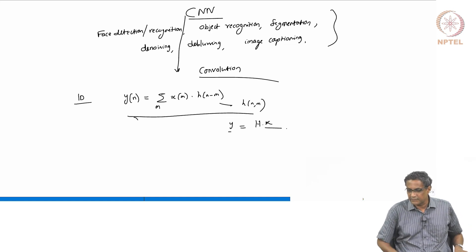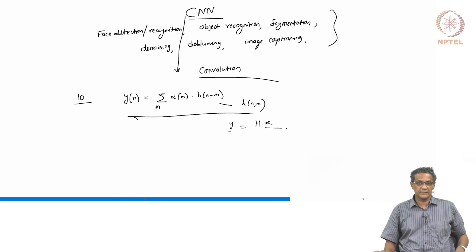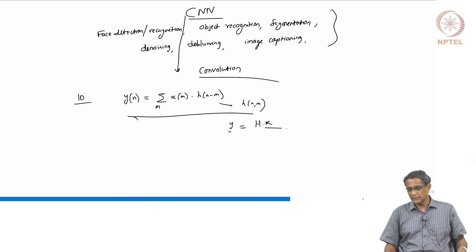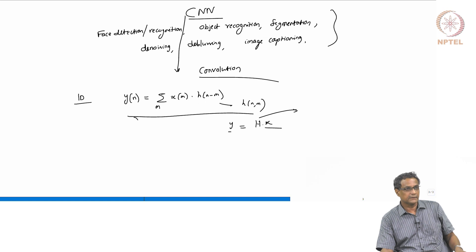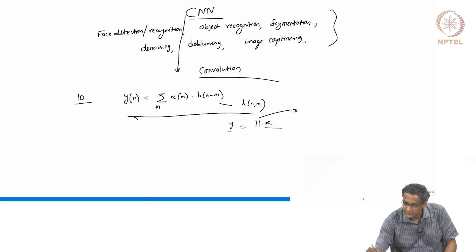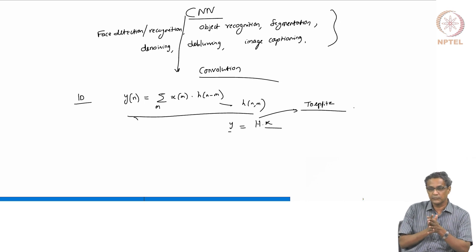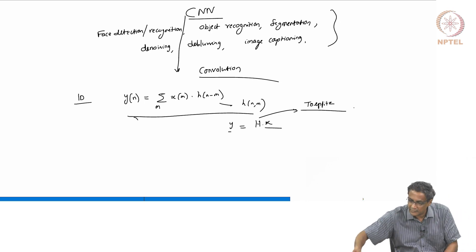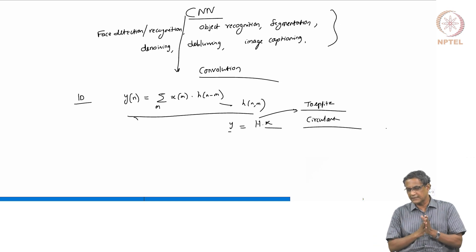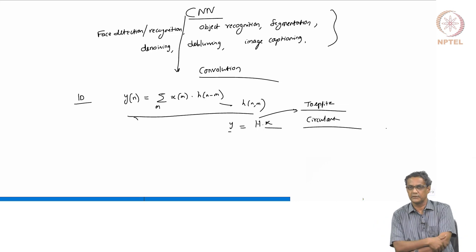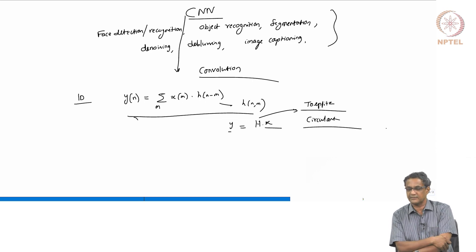So when you have an LTI system, this H has a particular structure — what is called a Toeplitz structure. This is not any old matrix; it is a matrix with a certain structure. And depending on how you express it, if you write linear convolution in terms of circular convolution — meaning you zero-pad X — then this H actually acquires an even better structure, what is called a circulant structure. A Toeplitz does not imply circulant, but circulant always implies Toeplitz.